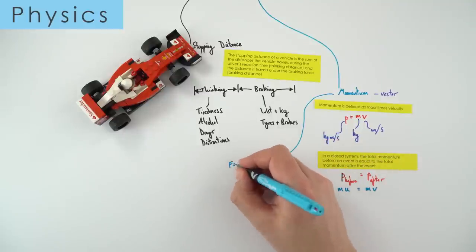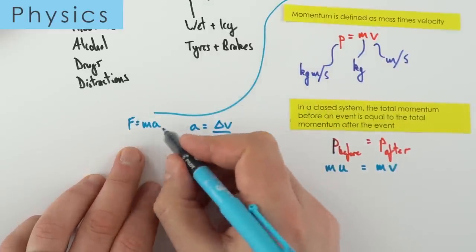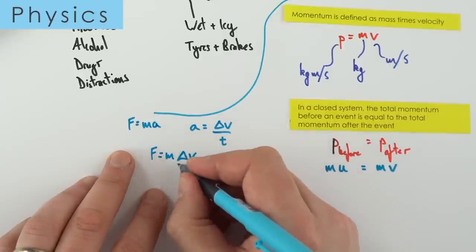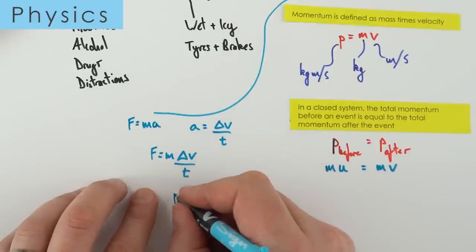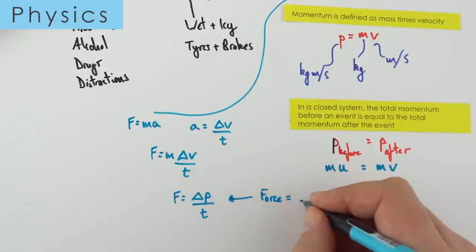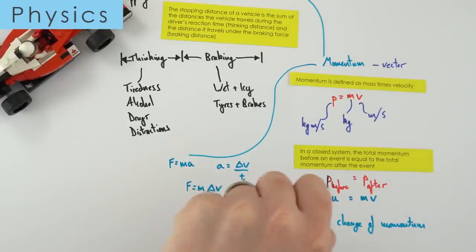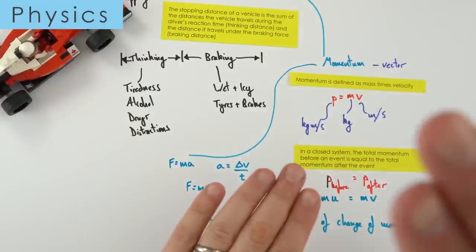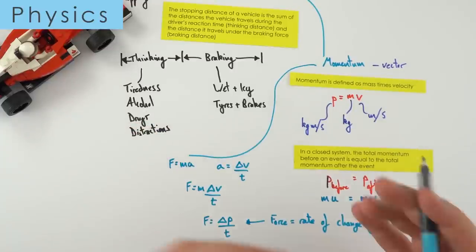Combining F = ma with a = Δv/t, we get F = m × Δv/t. Since mass × change in velocity equals change in momentum, force equals change in momentum divided by time — i.e. force is the rate of change of momentum. This means that if you change an object's momentum more slowly, less force is experienced. This is why cars have crumple zones and airbags — by slowing down the change in momentum, you reduce the force on the people inside.